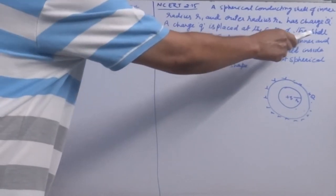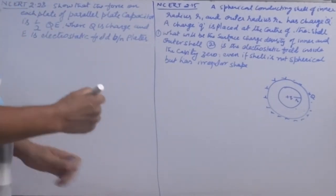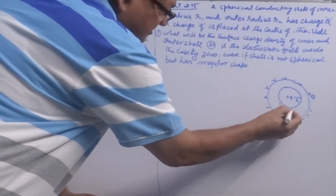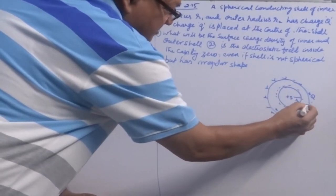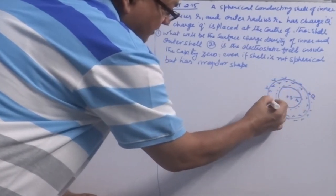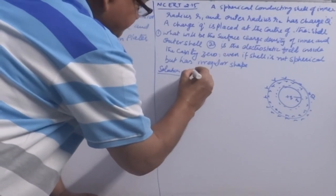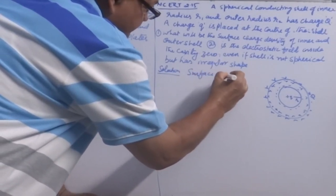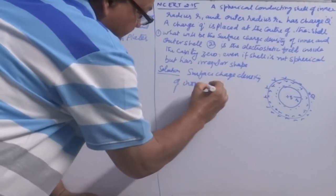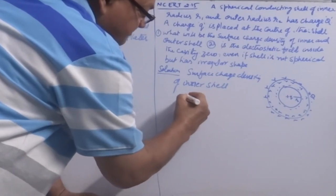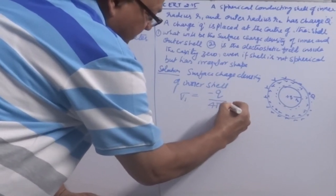A small charge q is placed at the center of the shell. This will induce a negative charge on the inner surface of the shell, and consequently induce a positive charge plus q on the outer surface. The surface charge density of the inner surface, sigma₁ = -q / (4πR1²).